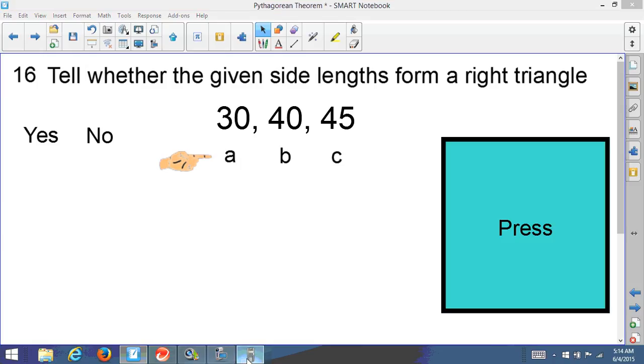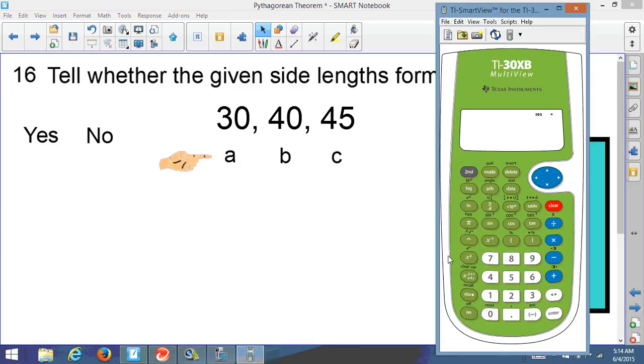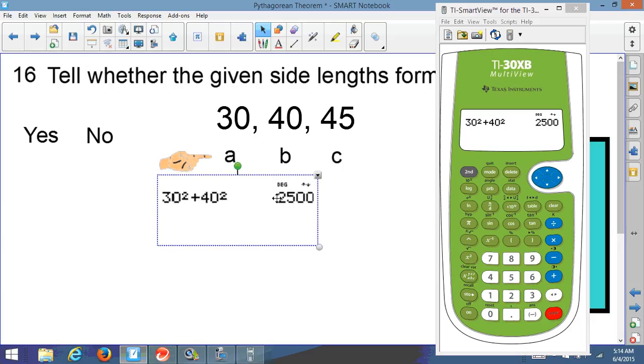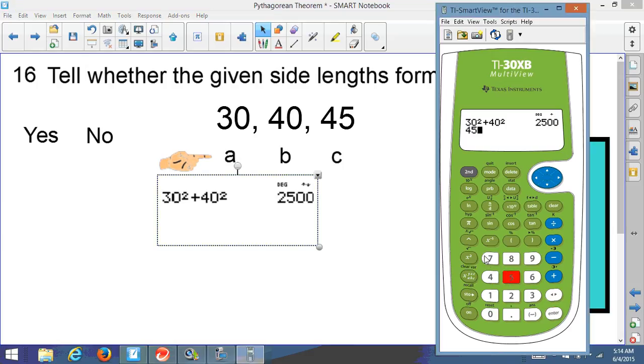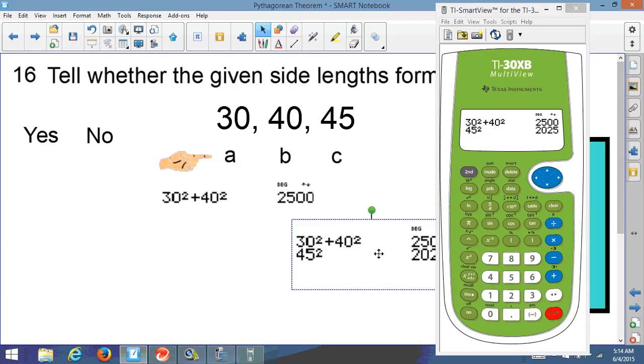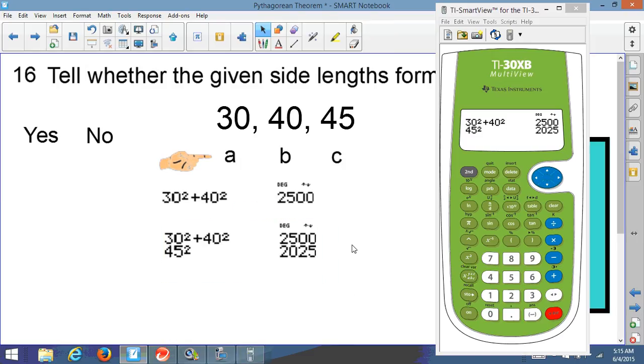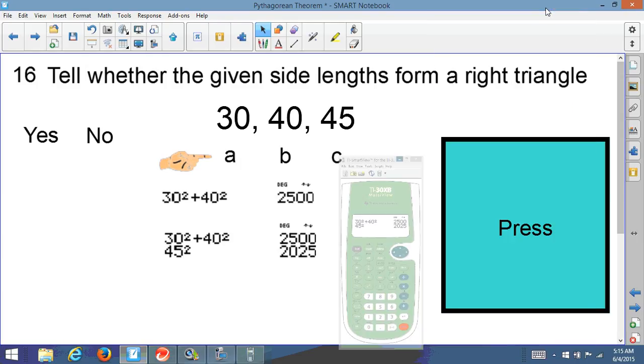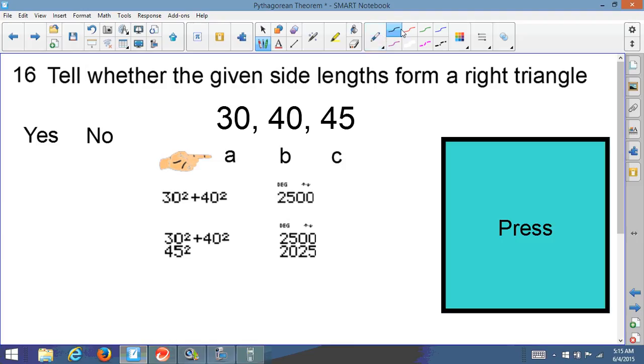So let me get my calculator and see if that'll work. So let's type 30 squared plus 40 squared. Let's see what that is equal to, 2,500. Now let's see if that is equal to 45 squared, c squared, 45 squared. And let's see if that is equal. Oh, it does not equal. So if it does not equal, my answer is going to be no. It does not form a right triangle because the Pythagorean theorem doesn't work out in this case.